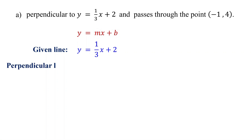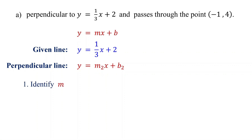Let's represent the equation of the perpendicular line in slope-intercept form as y equals m2x plus b2. Here, m2 is the slope and b2 is the y-intercept of the perpendicular line. To write the equation of the perpendicular line, we need to find m2 and b2. The first step is to identify the slope of the given line. It is one-third, so m equals one-third. That's all the information we need from the equation of the given line.